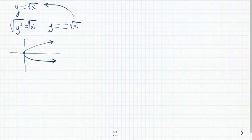Here's y. The top half of this curve is the y equals square root of x. The bottom half of the curve is y equals negative square root of x.